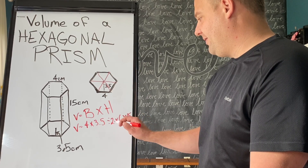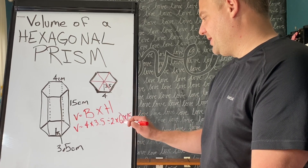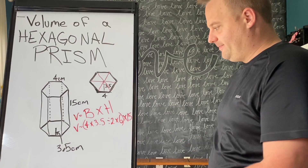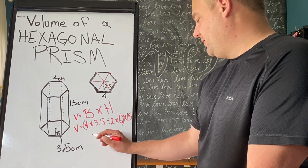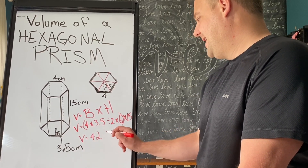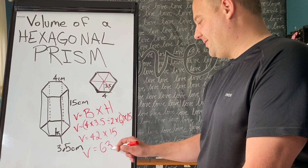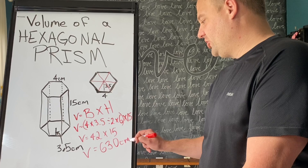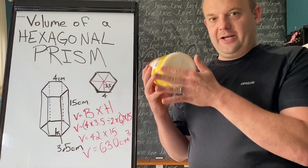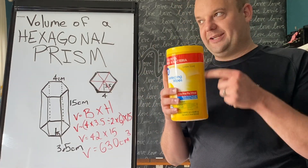So this is the area of the base right here, and that's the height. The area of the base times the height gives the volume. When you do it, you get volume equals 42 times 15, and the volume equals 630 centimeters cubed. The volume of this prism: area of the base times the height.